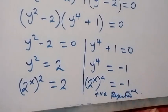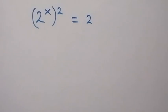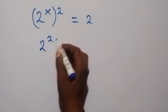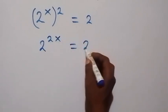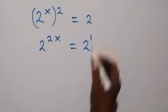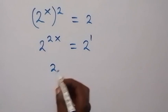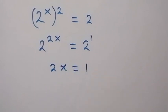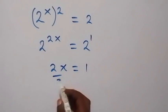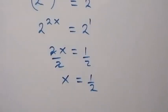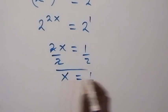We equate the powers, so we have 2x equals to 1, and when we divide both sides by 2, we have x equals to 1 over 2. So here, we have x to be equal to half.